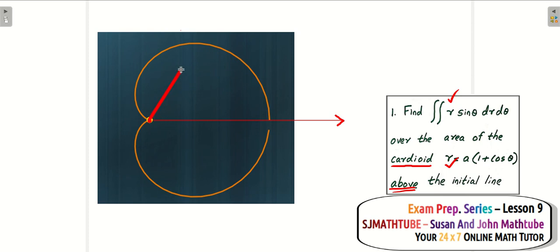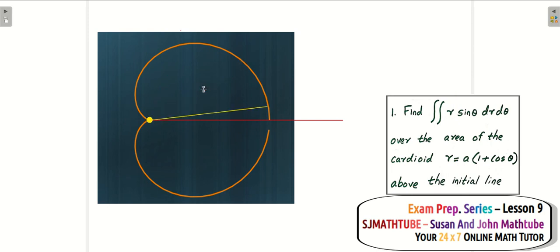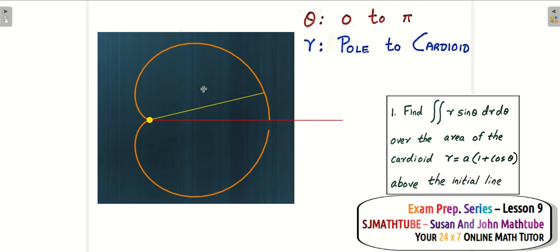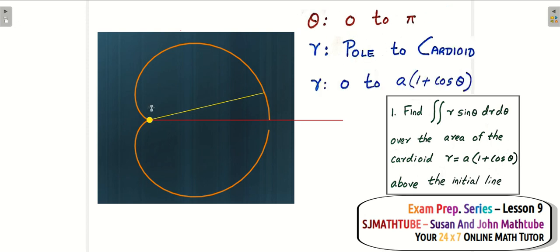Clearly the angle varies from 0 to 180 degrees. This is 90 degrees, so it exceeds 90, and clearly it goes from 0 to 180 degrees. The length of the stripe goes from the pole to the cardioid — you can check it anywhere. So theta varies from 0 to pi, and r varies from 0 at the pole to a times 1 plus cos theta at the cardioid, which is given in the question. So we have the limits.